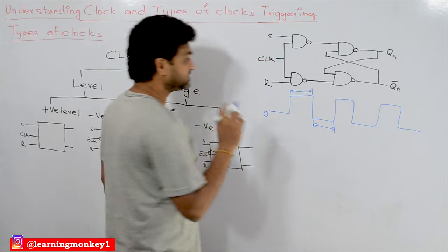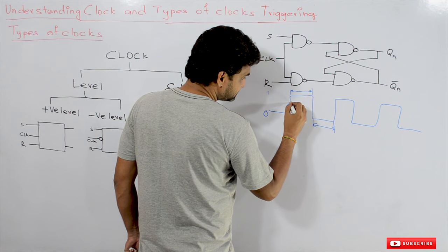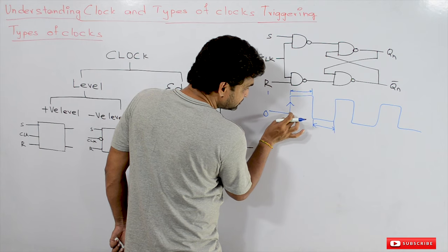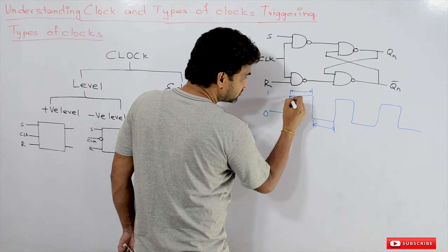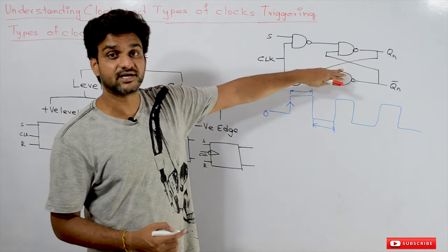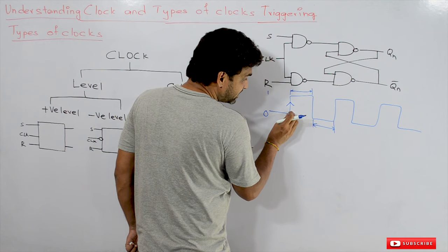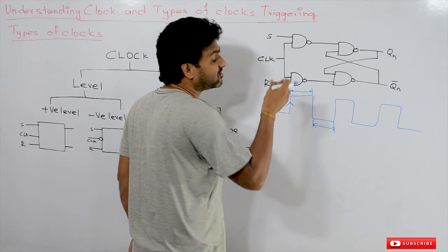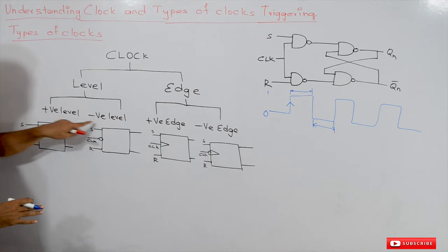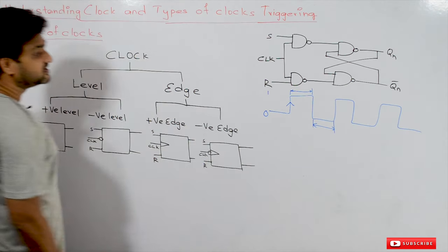The other type of clock mechanism is edge triggering mechanism. Whenever there is a transition from 0 to 1, at that edge the clock will be triggered — meaning the inputs are allowed into the circuit and the necessary changes will happen. Level triggering is of two types: positive level triggering and negative level triggering. Edge triggering is also of two types: positive edge triggering and negative edge triggering.